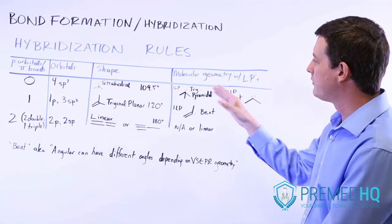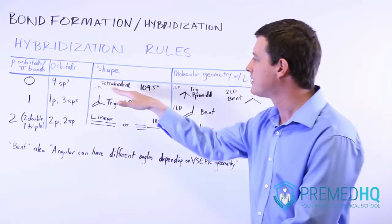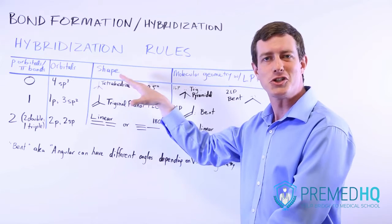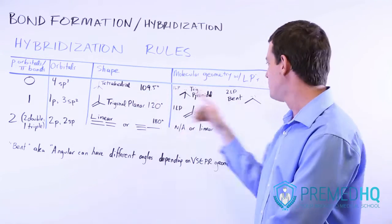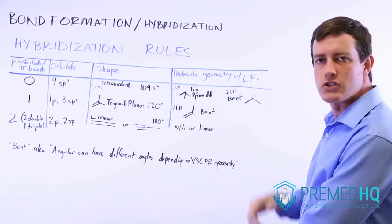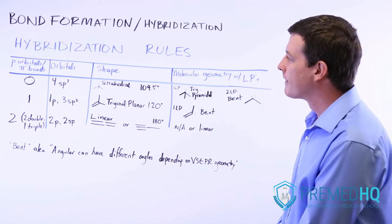The angular can have different angles because of the valence shell electron pair repulsion geometry. For example, if you have a bent shape that is based in the tetrahedral geometry, then it will have 109.5 degrees between these two bonding pairs.